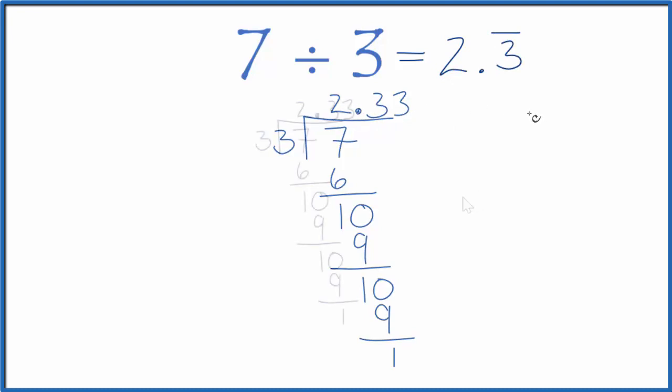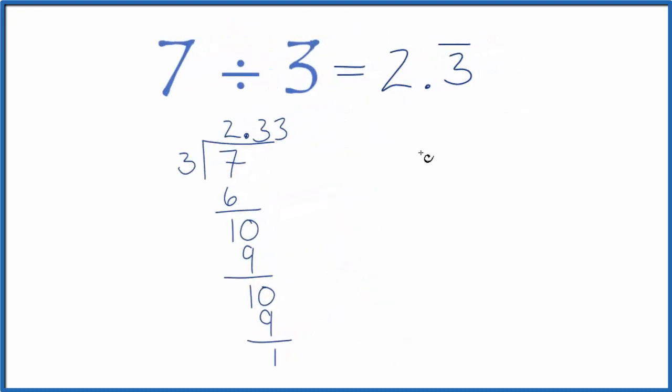We could also write this as a fraction: 7 divided by 3. That's an improper fraction. We could change it to a mixed fraction. 3 goes into 7 two times with 1 left over, so the mixed fraction for 7 divided by 3 would be 2 and 1/3.